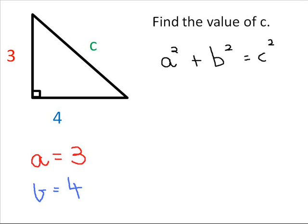We write down our formula, A squared plus B squared equals C squared, and substitute the numbers in. 3, 4, and leave the C.